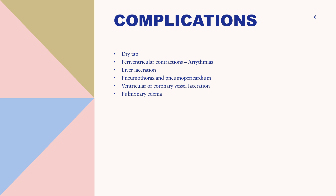One of the most frequent complications is a dry tap, especially when a blind approach is used. A dry tap is often caused by blockage of the needle by clotted blood or a skin plug. With the parasternal approach, the needle can become blocked by vigorous probing of the anterior costal cartilage. This can be solved by repositioning or irrigating the needle, allowing the effusion to be aspirated unless it is loculated. Other complications include premature ventricular contractions or arrhythmias — though no serious dysrhythmias resulting in hemodynamic compromise — and liver laceration, most commonly seen with the traditional sub-xiphoid approach. Pneumothorax and pneumopericardium are most commonly seen with the parasternal and apical approaches.